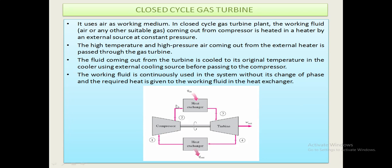Closed cycle gas turbine: it uses air as the working medium. In a closed cycle gas turbine plant, the working fluid — air or any other suitable gas — coming out from the compressor is heated in a heater by an external source at constant pressure. The high-temperature and high-pressure air coming out from the external heater is passed through the gas turbine. The fluid coming out from the turbine is cooled to its original temperature in a cooler using an external cooling source before passing back to the compressor. The working fluid is continuously used in the system and the required heat is given to the working fluid in the heat exchanger.